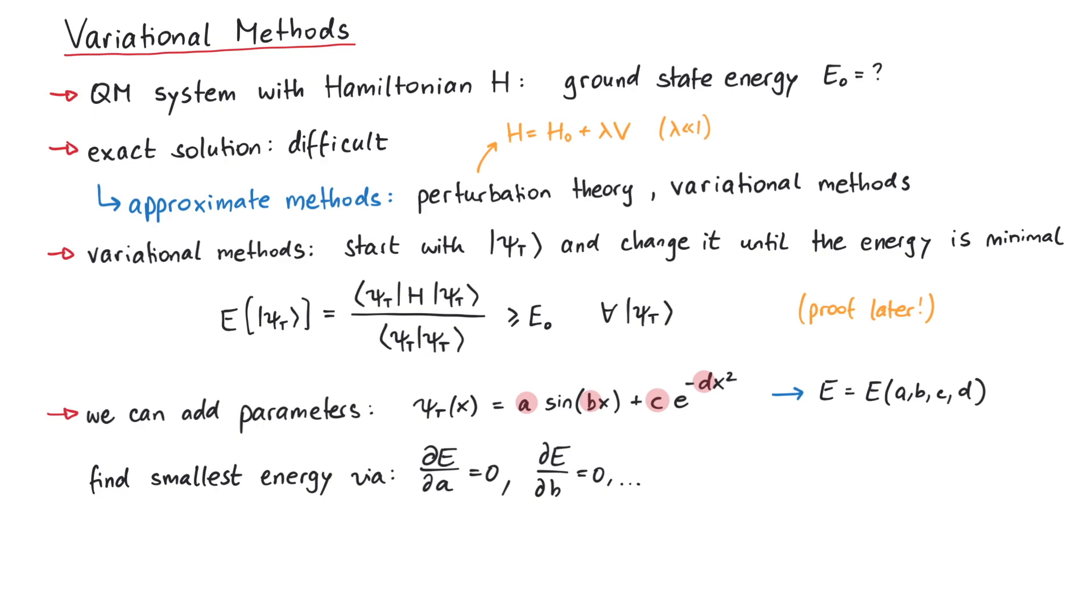In other words, we want to find those values for A, B, C, and D such that the resulting energy is as low as possible. This is known as the Ritz method, named after the Swiss physicist Walter Ritz.